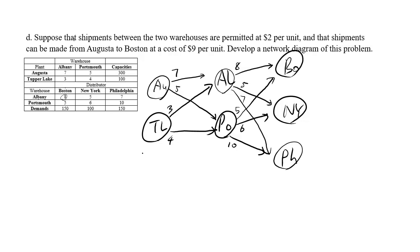Now let's add this information. There are shipments allowed between two places. You can send shipments from Albany to Portsmouth at $2 per unit and Portsmouth can send to Albany at $2 per unit. To write down the linear programming problem, it's good to put both arrows there. From Augusta to Boston, there's a new path which is 9. That's the new network diagram.